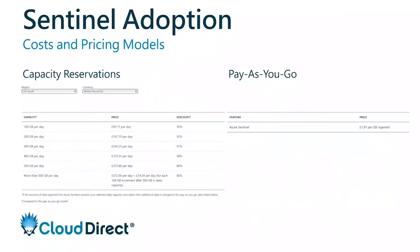The other part of Sentinel is, as a cloud product, you pay for what you use. Sentinel is costed based on the amount of data that you ingest and the amount of data that's analyzed. There are some data sources which are free — things like Azure Activity Log, Azure Active Directory — basically the data that Microsoft already holds within their cloud. Most of that is free to ingest into Sentinel.